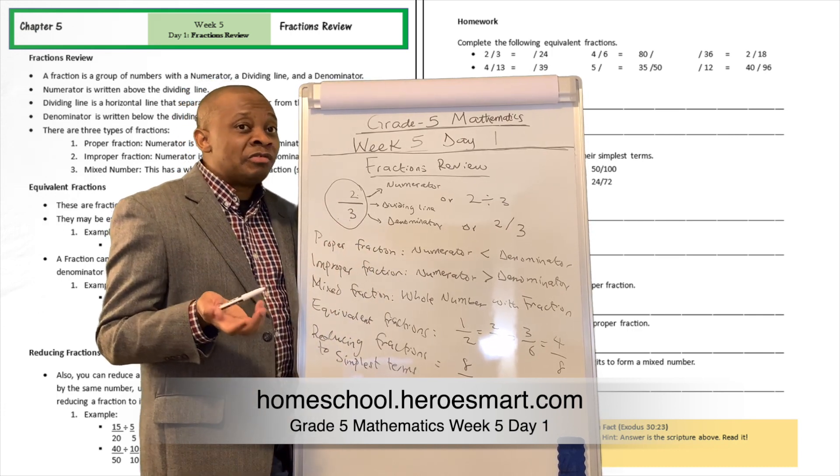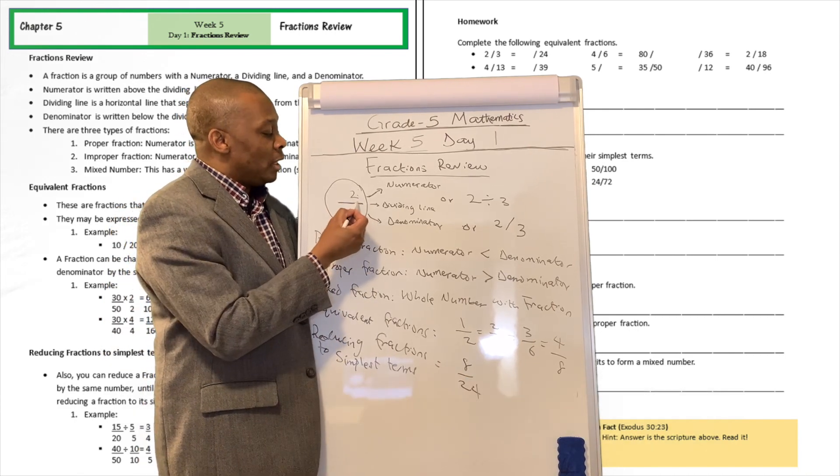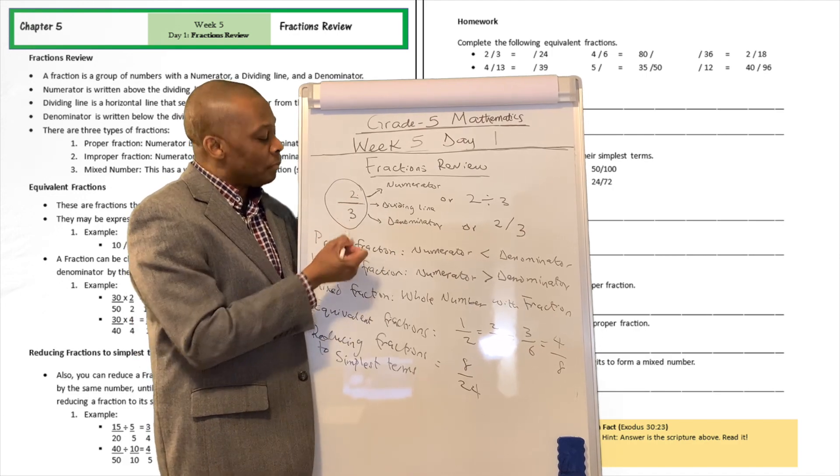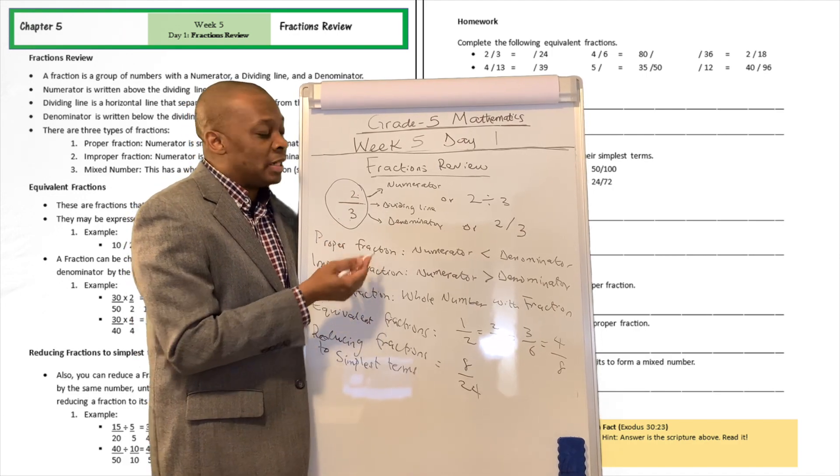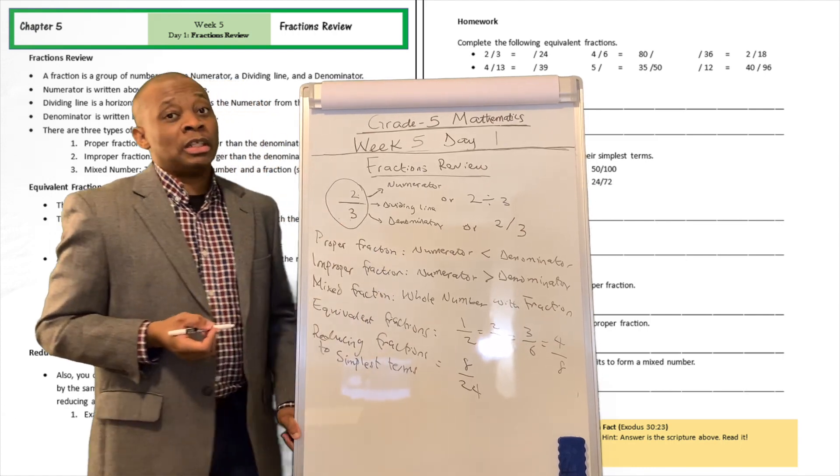So there are three major components to the fraction. So there is one over here, this is the numerator, is going to be on top of the dividing line, two, that's the numerator. Three is going to be the denominator, that's the number below the dividing line, and then you've got a dividing line just like that.